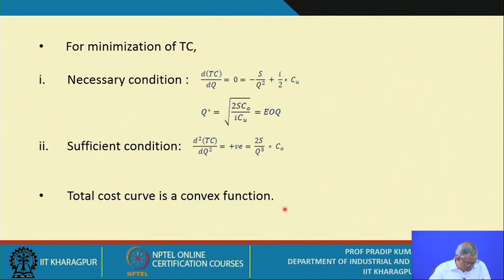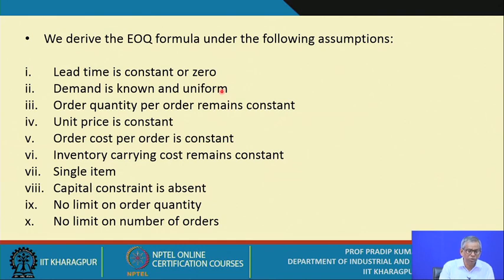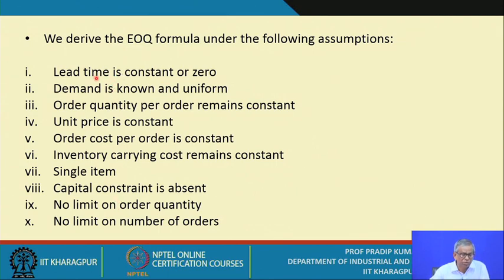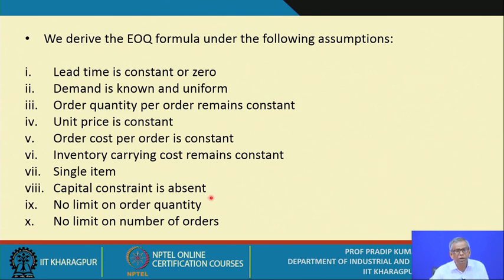The assumptions made when deriving the EOQ or Wilson's lot size formula are: lead time is constant or zero; demand is known and uniform; order quantity per order remains constant; unit price is constant regardless of order quantity; order cost per order is constant; inventory carrying cost remains constant; it is a single item case; no capital constraint — meaning no limit on average inventory in monetary terms; no limit on order quantity; and no limit on the number of orders. These are the ten assumptions underlying the EOQ formula, which will be explained further in subsequent lecture sessions.